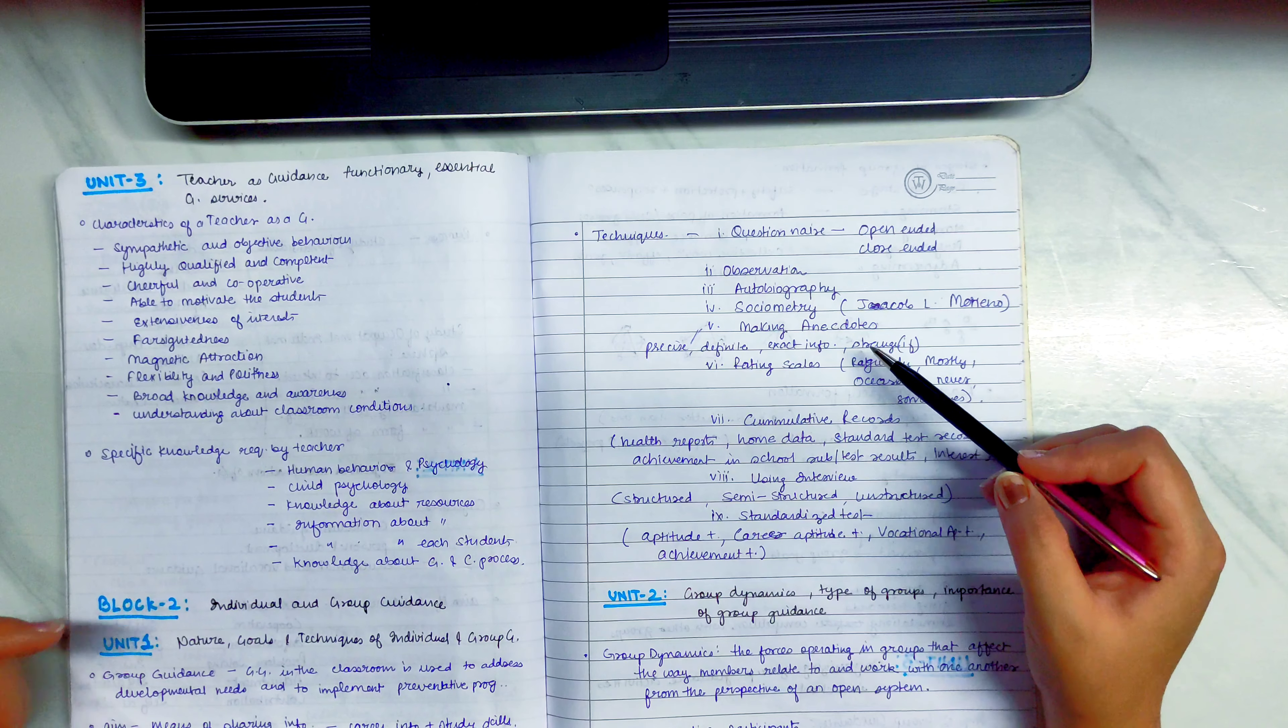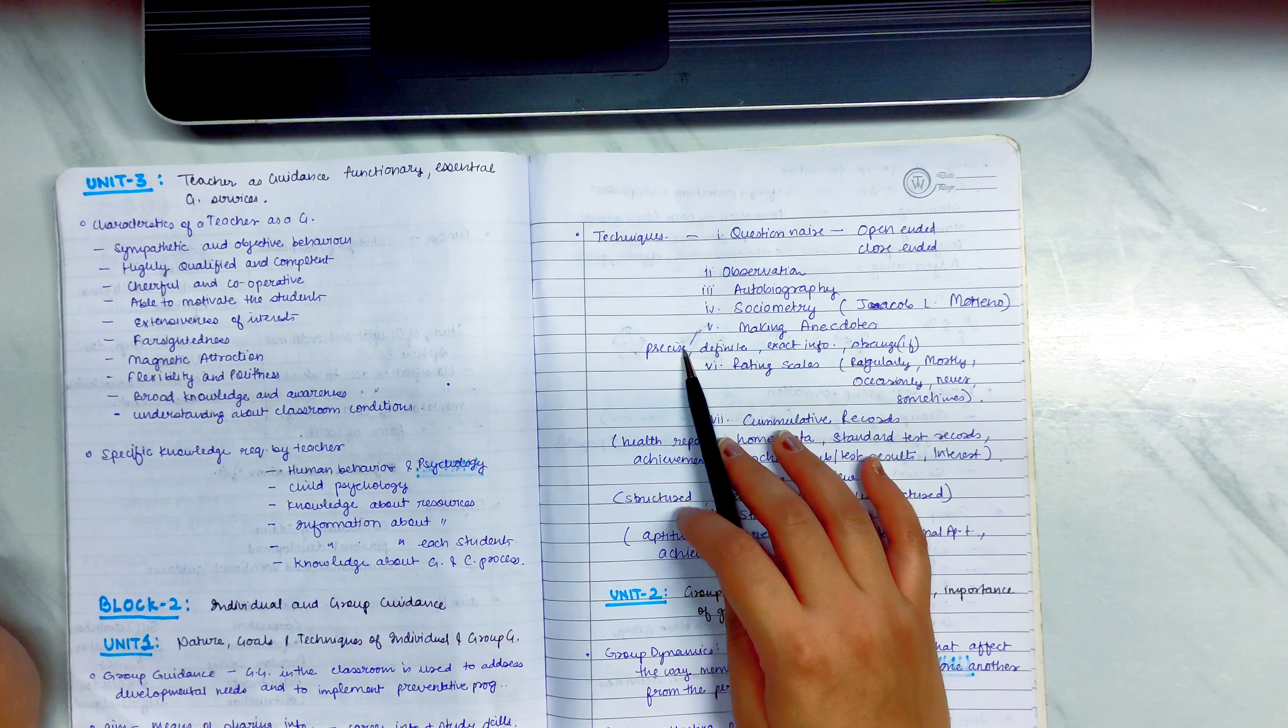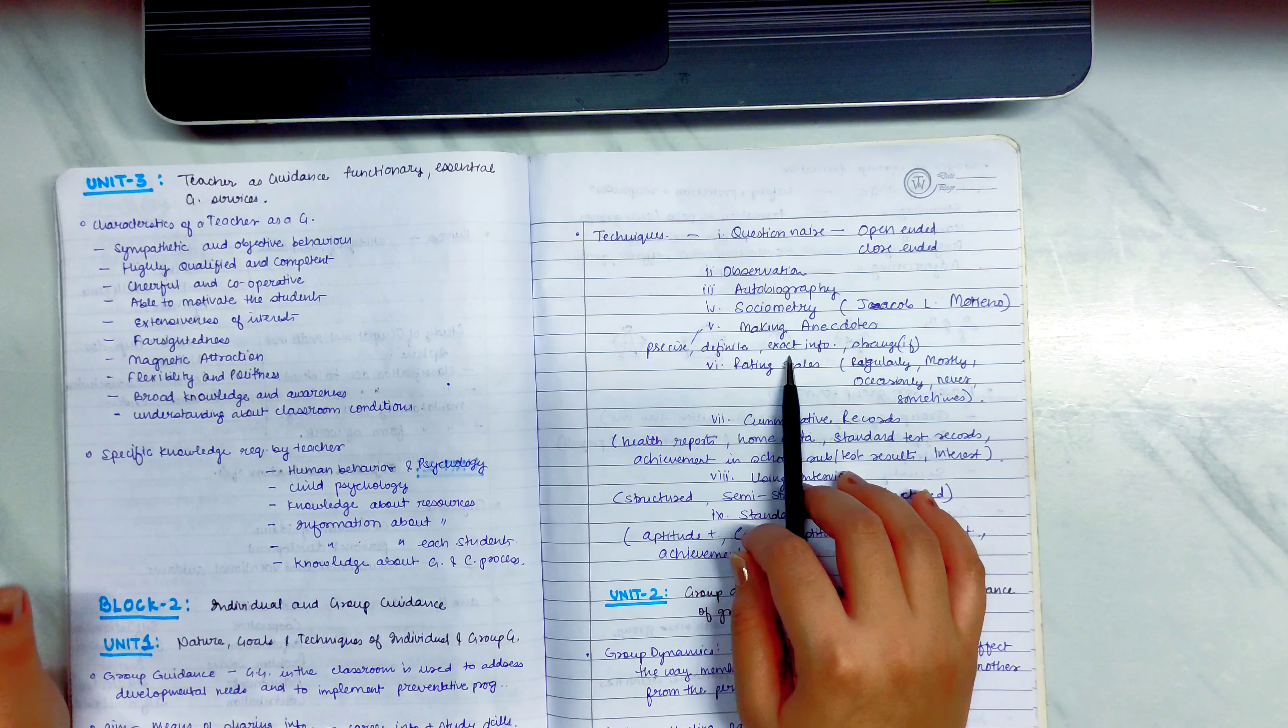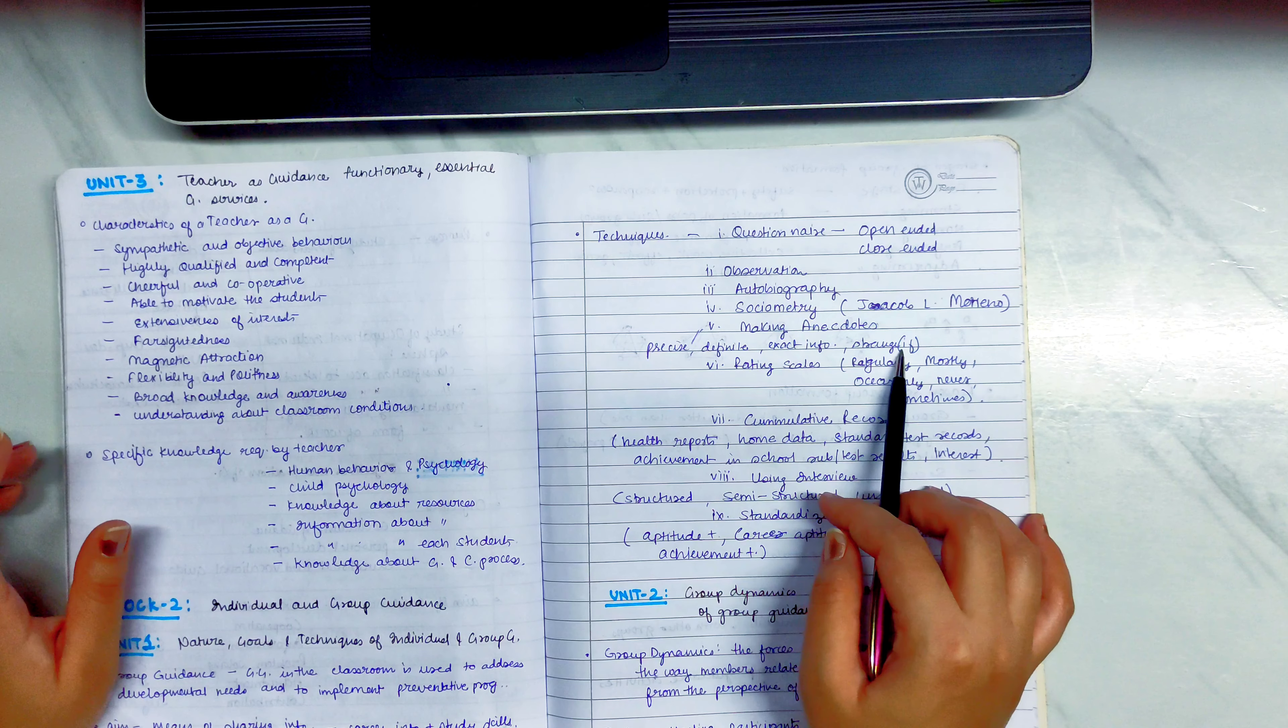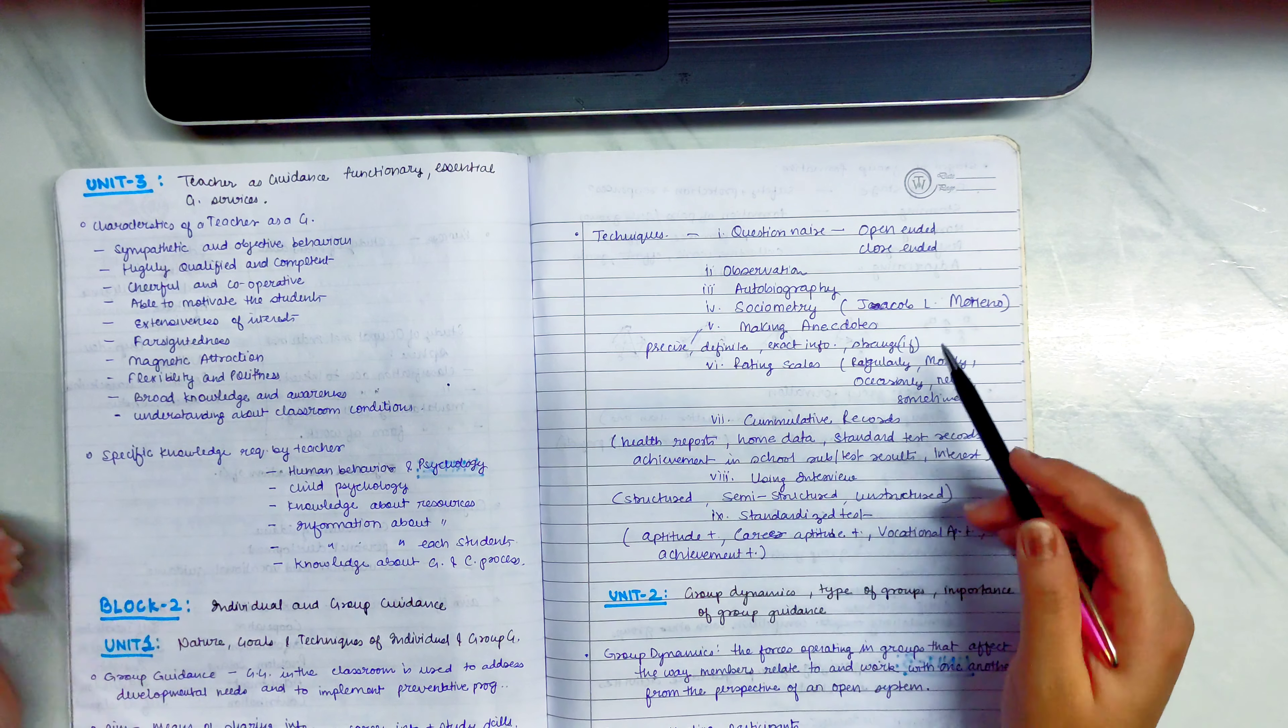Fifth is making anecdotes. So, what will you do in anecdotes? It will be precise information, definite information, exact. And if you observe a child's behavior, you will write about it.